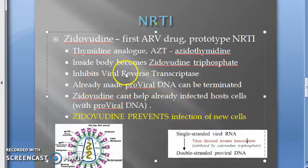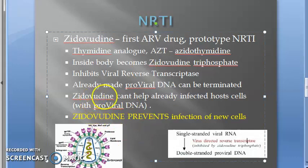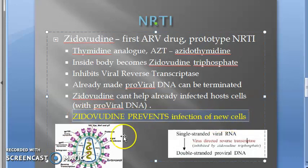Zidovudine becomes zidovudine triphosphate in the body. It prevents the conversion of viral RNA to proviral DNA. However, if proviral DNA already exists inside the host cell, zidovudine cannot act on it. But if proviral DNA is outside and hasn't infected another host cell, zidovudine can terminate chain elongation.